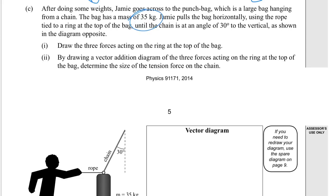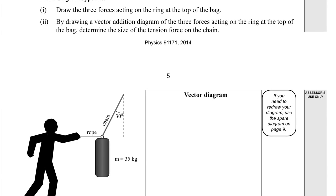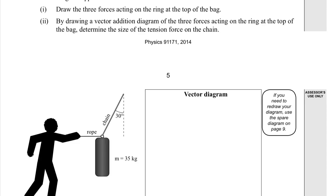We could have eliminated all of that text and just used the diagram below. It says draw the three forces acting on the ring at the top of the bag. Here's the ring. I'll draw them over the top here. We've got the force here being pulled, we might call that force of Jamie. Here we've got the force of the bag, and then we've got a tension force on the chain.